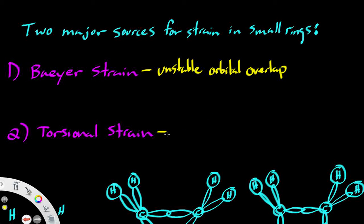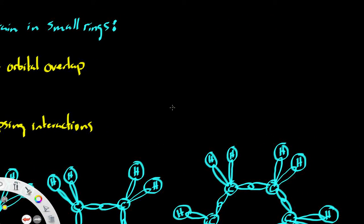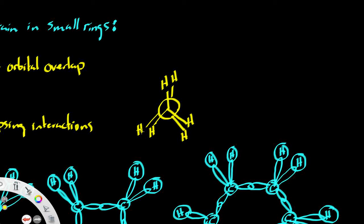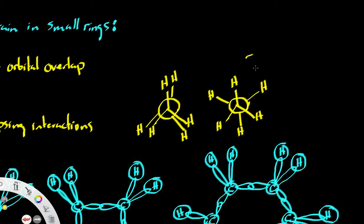Torsional strain describes eclipsing interactions. Eclipsing interactions are typically shown on Newman projections and they look like this — our bonds are overlapping or eclipsing one another and they are at a high energy state relative to a staggered interaction, which looks like bonds that are sixty degrees apart from one another. The staggered interaction is going to be more stable.